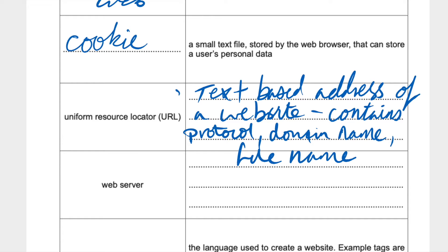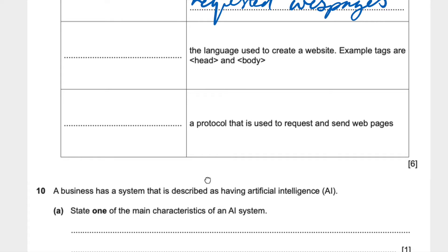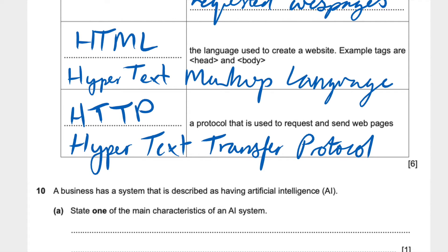For the web server: a web server stores and returns requested web pages. The language used to create a website — with example tags like head and body — is obviously HTML, hypertext markup language. A protocol that is used to request and send web pages would be HTTP, hypertext transfer protocol. Good, that would get us the six marks — nice, easy six marks.